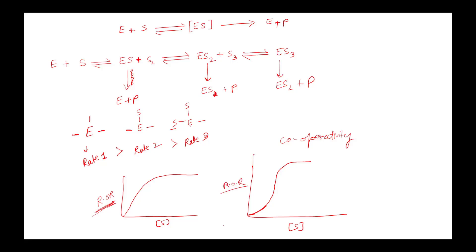This phenomenon is referred to as cooperativity, and the binding of additional substrates can be of three types. First is positive cooperativity: once the first substrate binds, it increases the affinity of the enzyme towards other substrates, thereby increasing the rate of reaction.